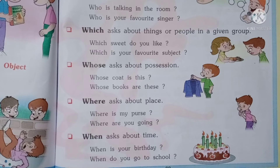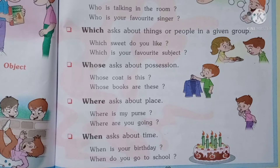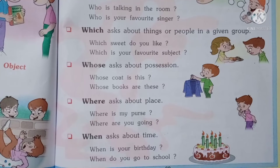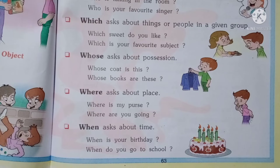The next word is 'where' (W-H-E-R-E). 'Where' is used to ask about a place. For example: where is my post? Where are you going? Where is your school? Where is your home? Where is your father? Where are your books? We use 'where' for this type of question.